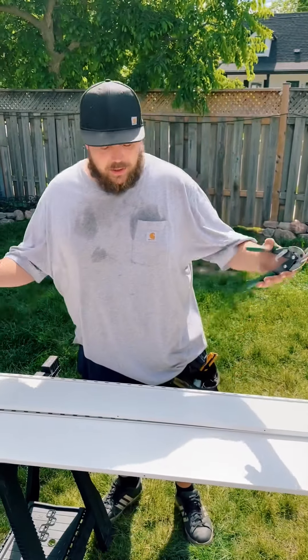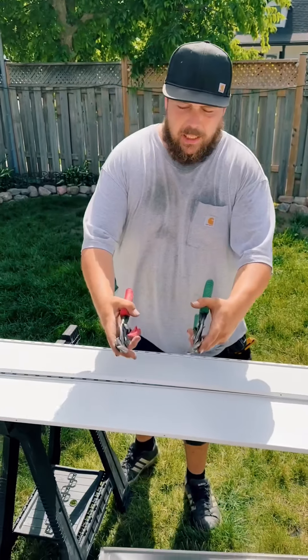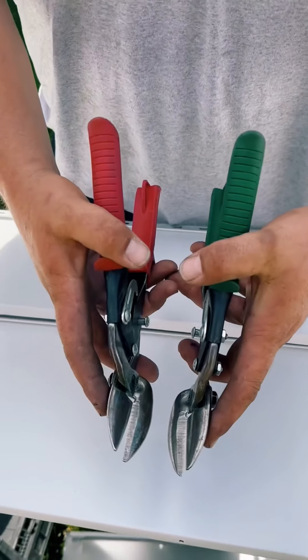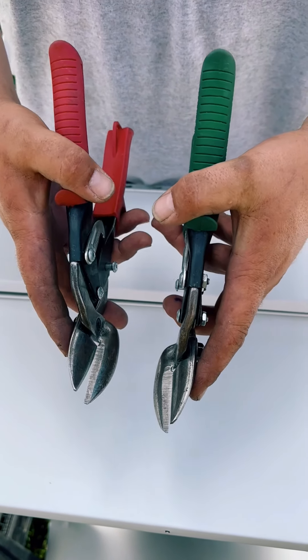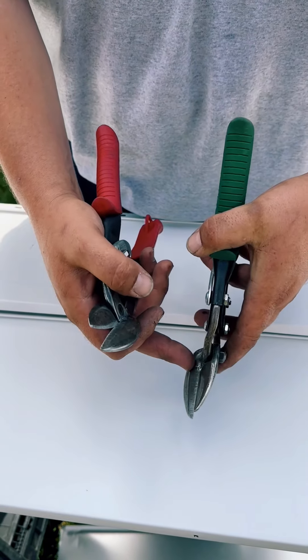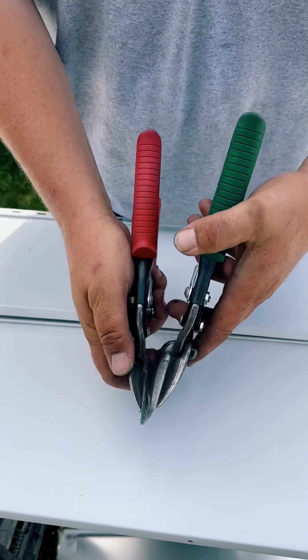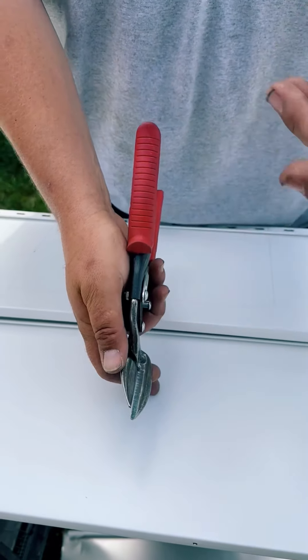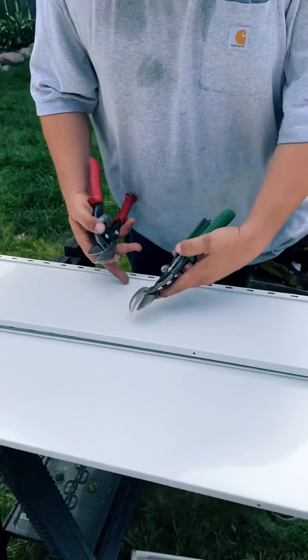Check it out boys, listen pal, a lot of lads have been asking me what's the difference between the left and the right hand snips. Well listen pal, this one's going to throw your scrap material upward on the right hand side. These are going to put your scrap material upward on the left hand side.